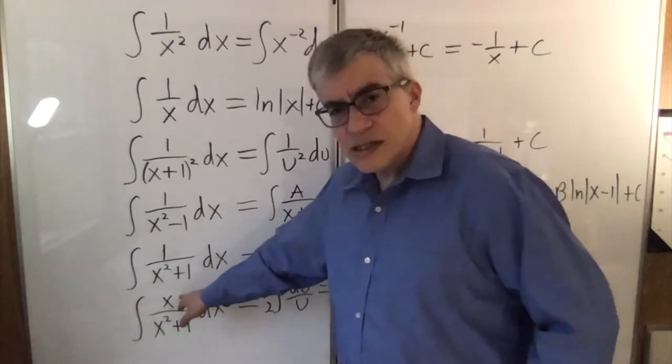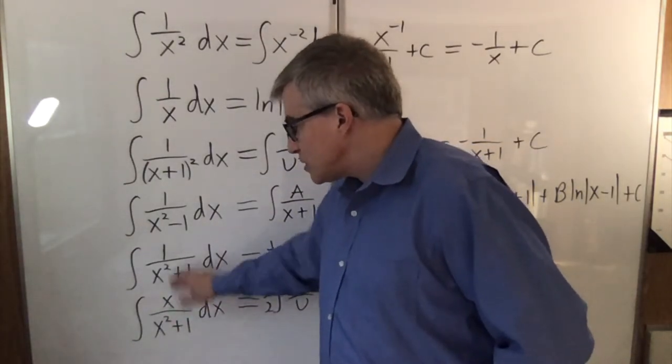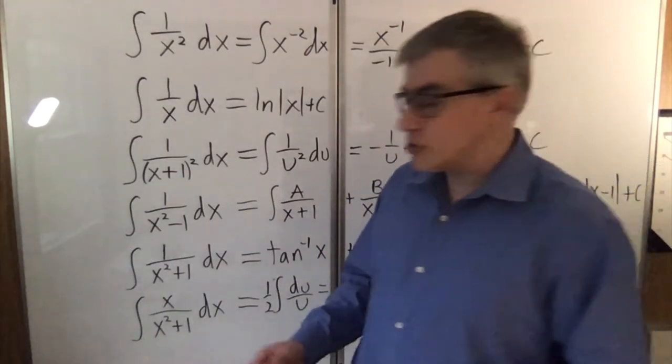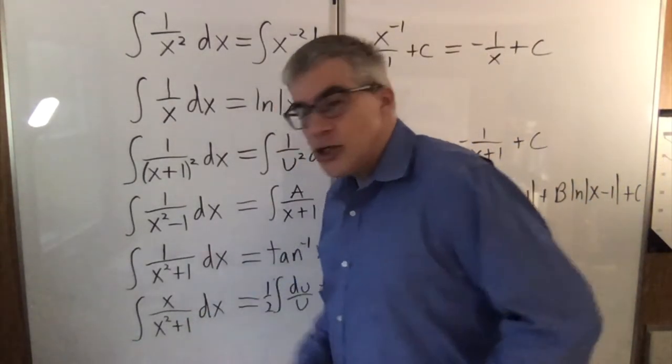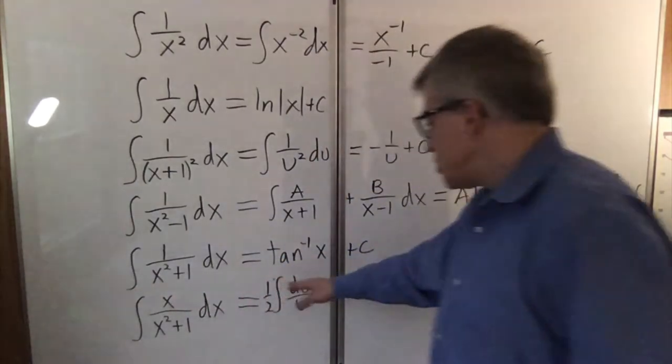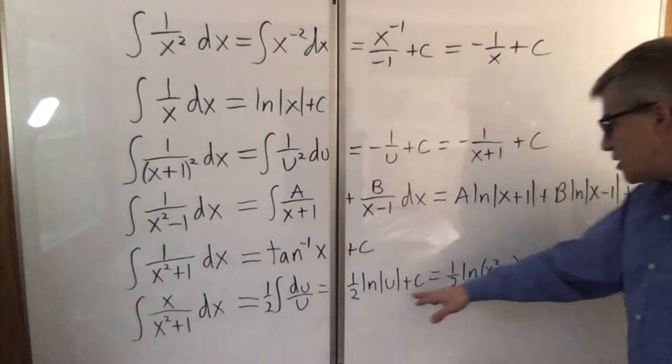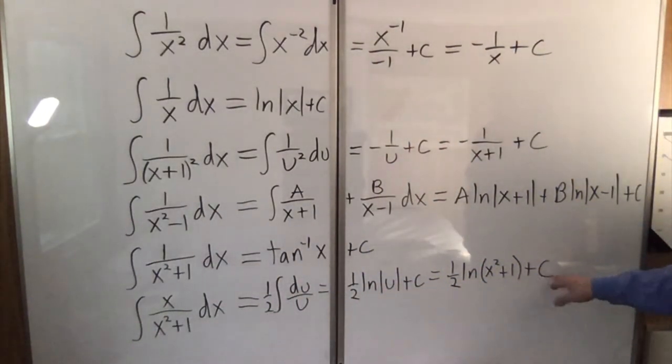And then finally this example, what if we had an x over x squared plus 1? Well that presence of the x makes all the difference. It completely changes the approach. For this one we'd say u is x squared plus 1 and then du would be 2x dx. We end up with 1 half du over u. We integrate that, back substitute, and we have our answer.